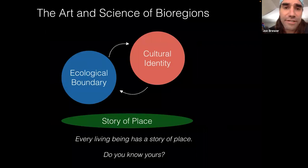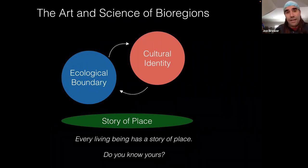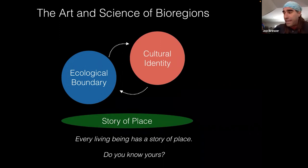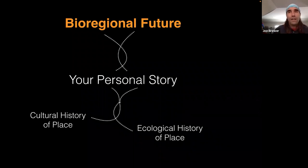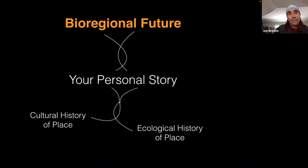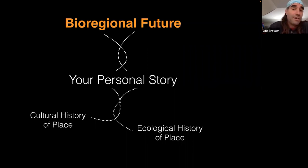The art and science of bioregions works like this: each bioregion has an ecological boundary in which it lives, but for humans it also has a cultural identity. When you put these together, what emerges is a coherent story of place. Every living being on Earth has a story of place. The question becomes: do you know yours? Our personal stories are always connected to the reality that we exist somewhere. Whether born into a place or migrated there, we enter a landscape with a cultural and ecological history continually emerging in the present. As members of that community, we are part of that story and can give birth to a bioregional future through our individual and collective actions.